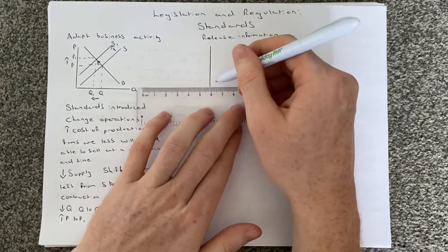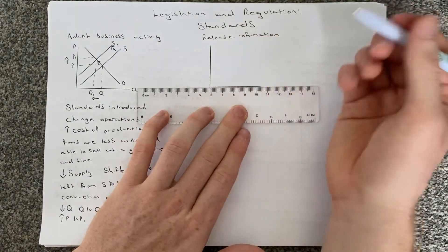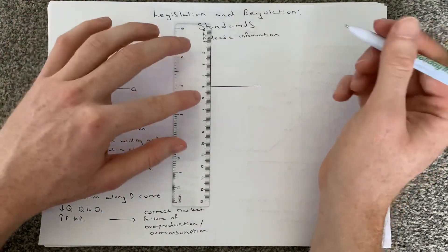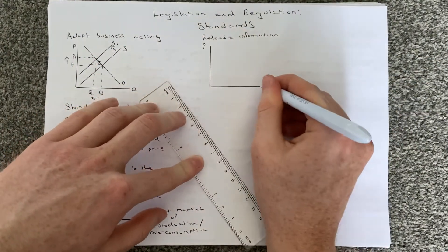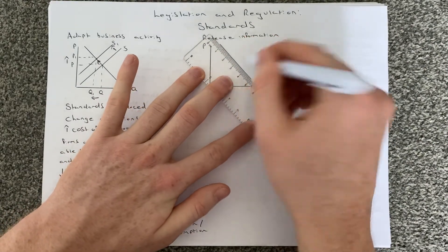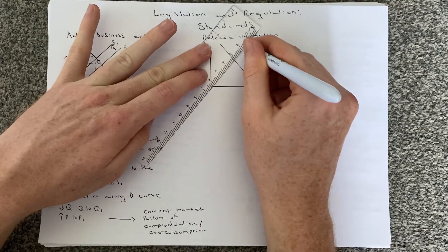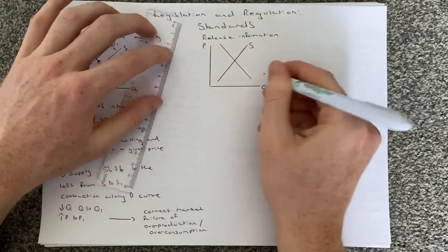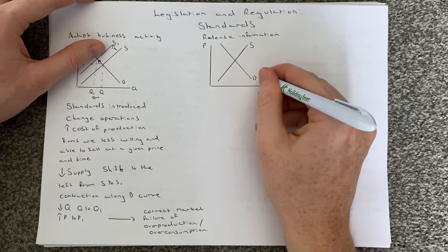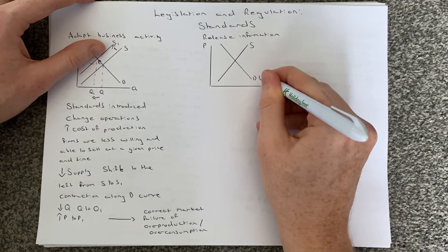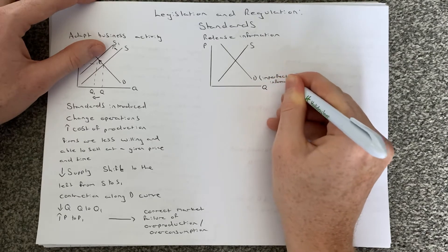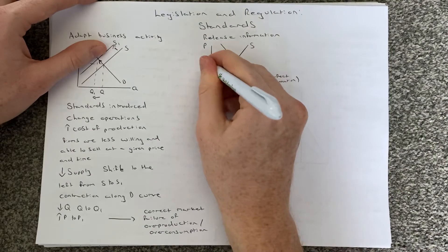You could also draw the positive or negative externalities in consumption diagram that we looked at when we examined information failure. So we have price, quantity, a downward sloping demand curve, an upward sloping supply curve, labelled S and D. If we think about a demerit good here, I'm going to call this therefore imperfect information.